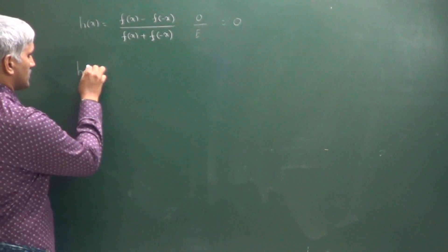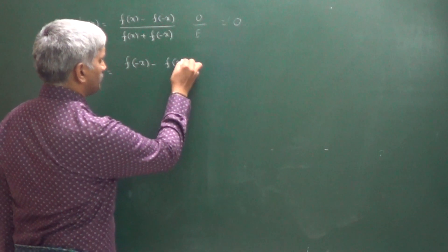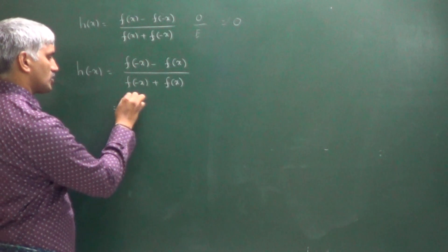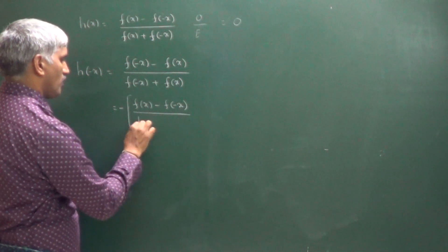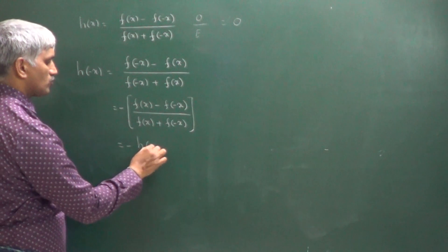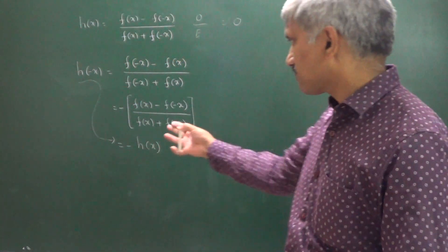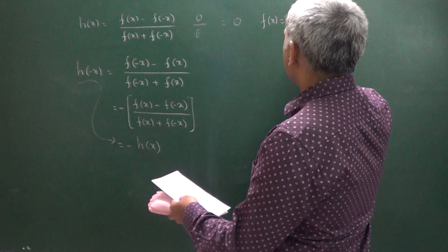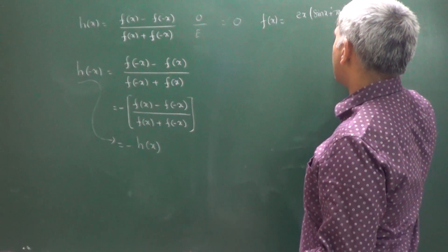To verify: h of minus x equals f of minus x minus f of x, divided by f of minus x plus f of x. Taking minus common from the numerator gives minus times f of x minus f of minus x, divided by f of x plus f of minus x, which is minus h of x. Confirmed — the function is an odd function.